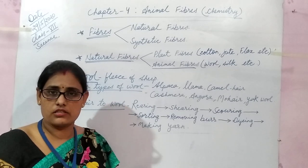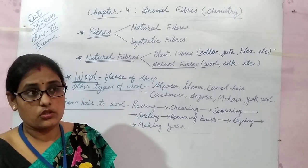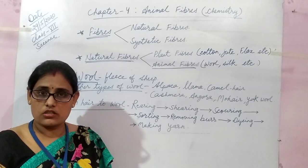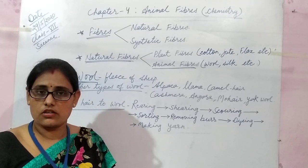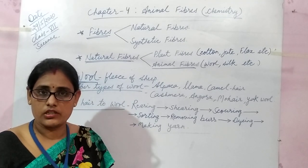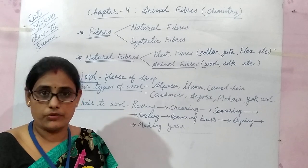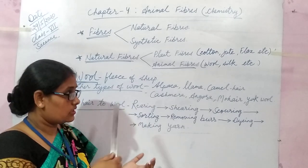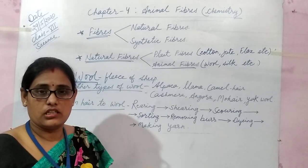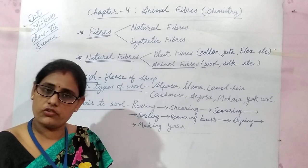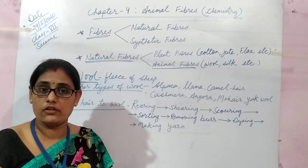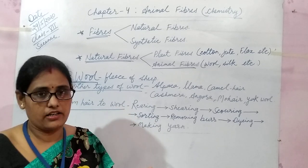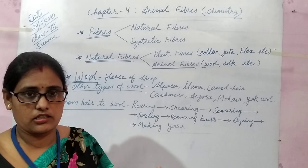Like in summer season, we wear cotton clothes, because cotton is a very soft fiber. It keeps the body cool because it absorbs sweat. Similarly, in winter season, we wear different varieties of clothes like woolen clothes, because wool traps the air and air is a bad conductor of heat.